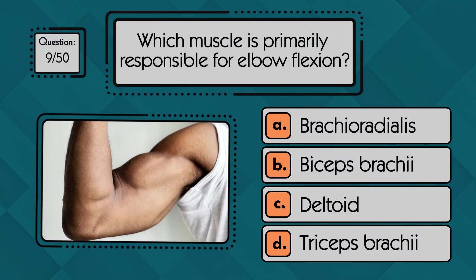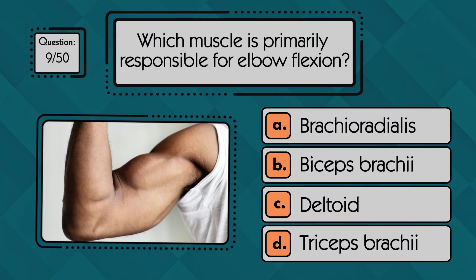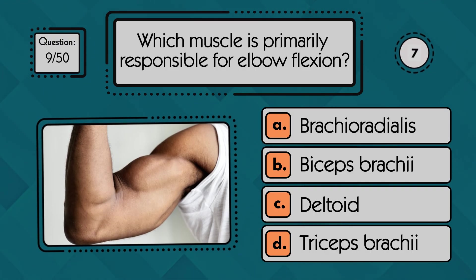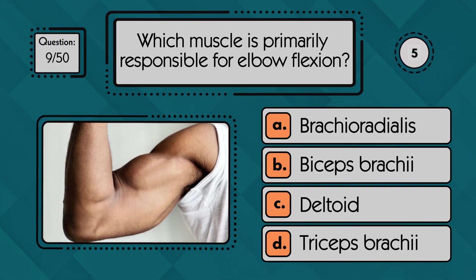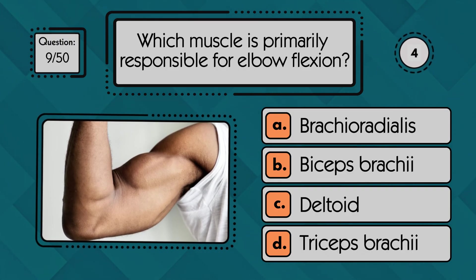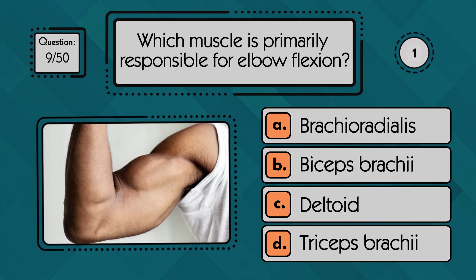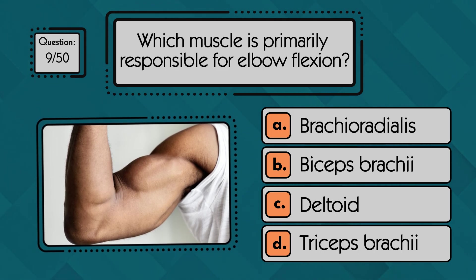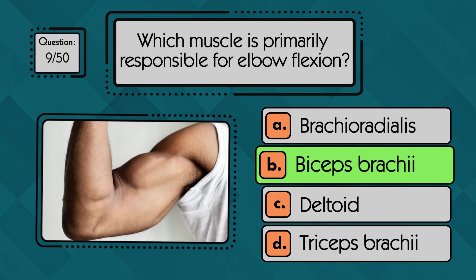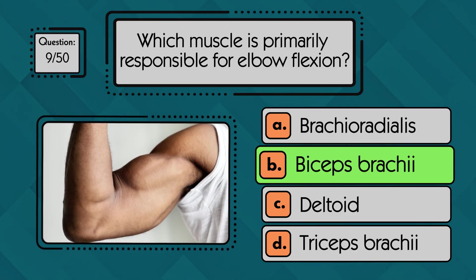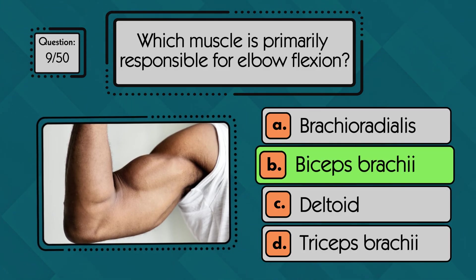Which muscle is primarily responsible for elbow flexion? Elbow flexion is mainly produced by the biceps brachii, which lifts the forearm by contracting at the front of the upper arm.